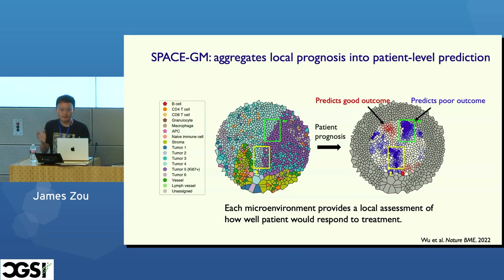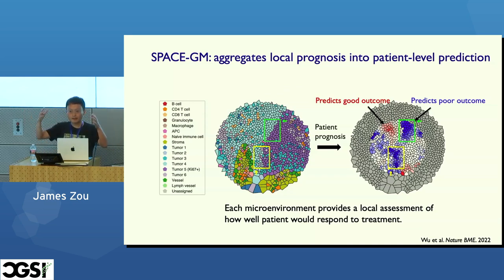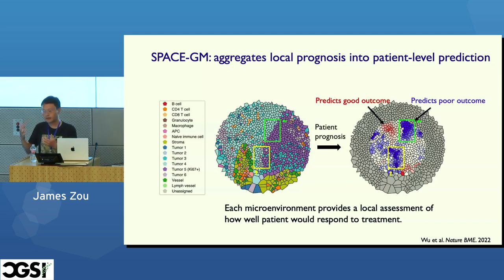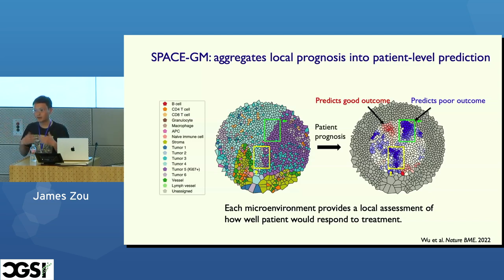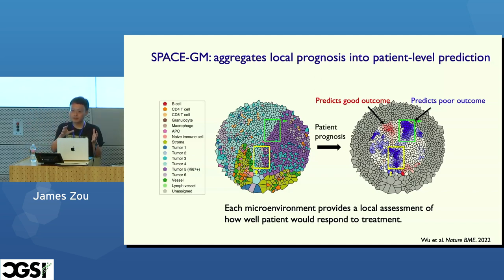The whole slide can have many hundreds of these different microenvironments. Each microenvironment makes a local assessment of how well the patient might respond to treatment. In the end, we aggregate by taking some sort of average across these different votes from different microenvironments to get a patient-level consensus of how well this patient will respond to treatment — going from individual microenvironment-level predictions to patient-level outcome assessment.